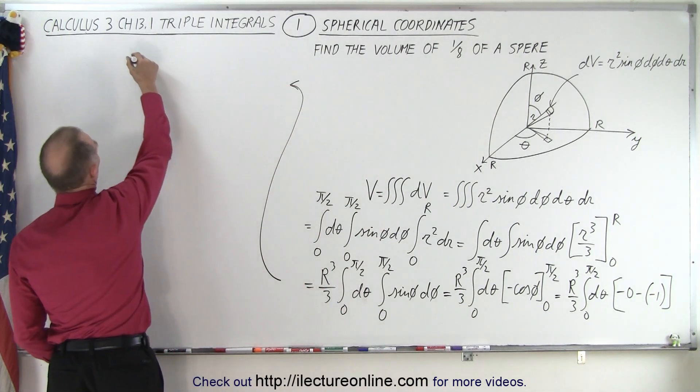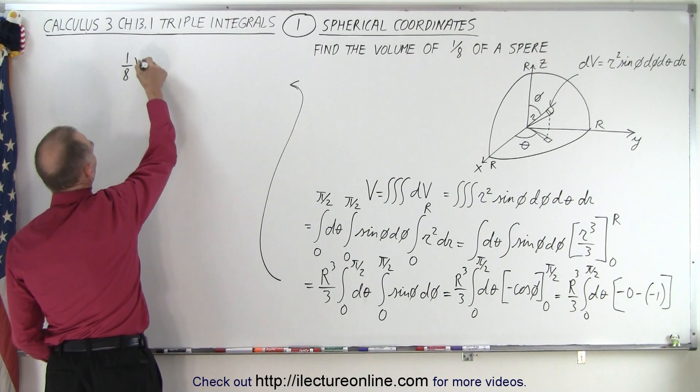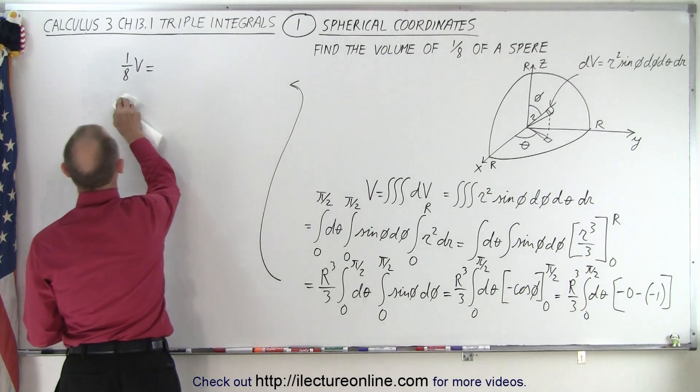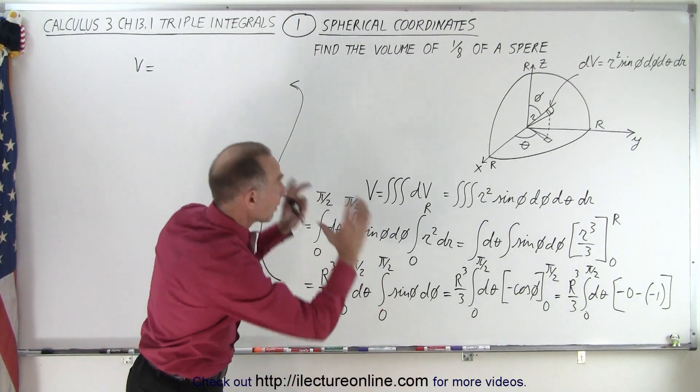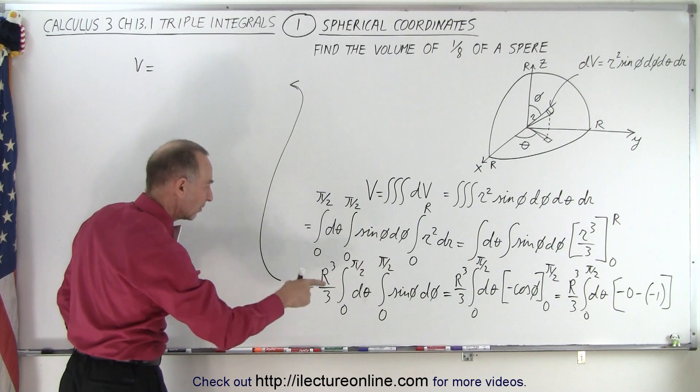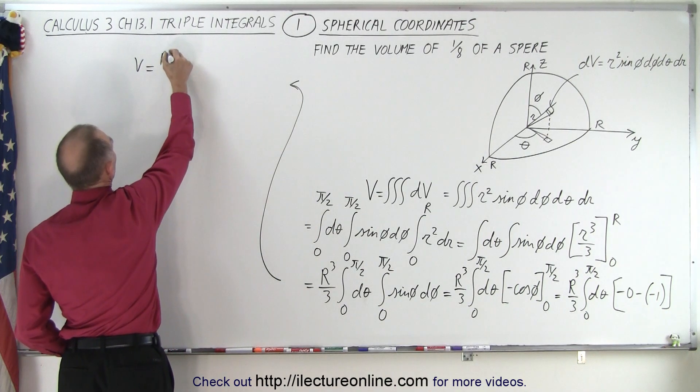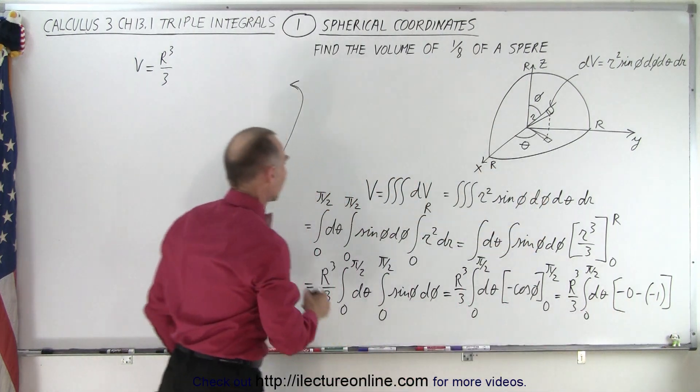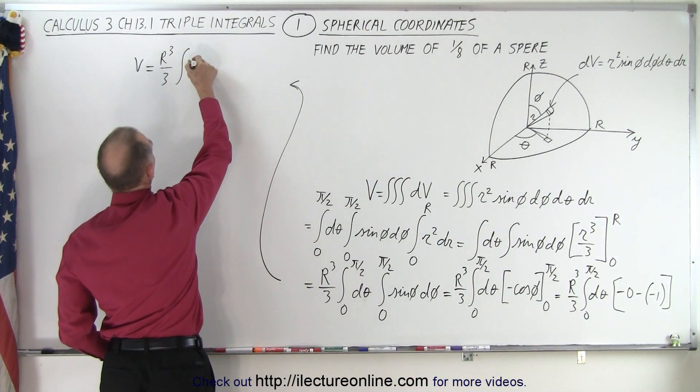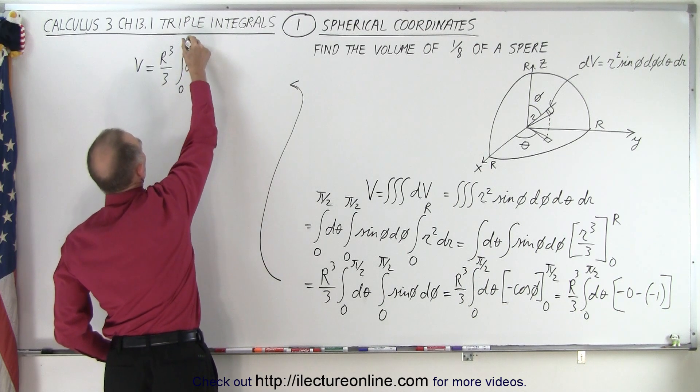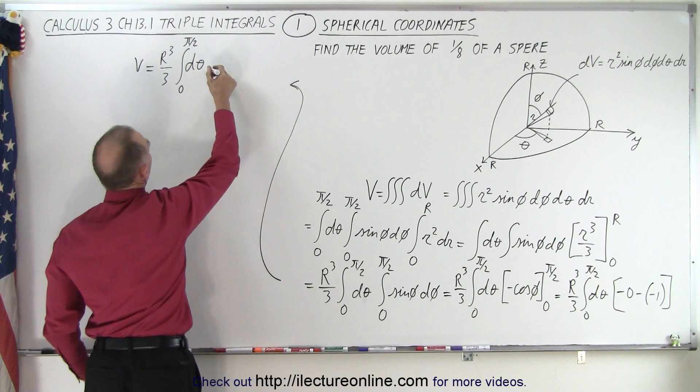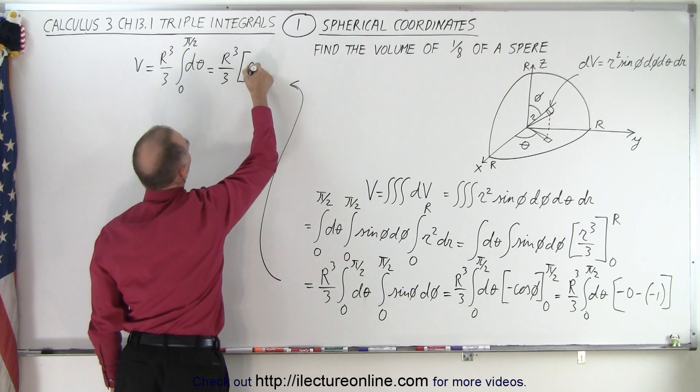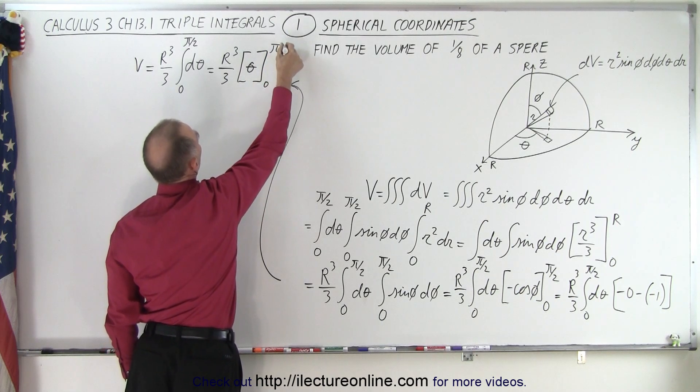So then we can continue. The volume of that section of the sphere is equal to, so we have r cubed over 3, we now realize that this becomes a 1, and all we have left now is the integral of d theta going from 0 to pi over 2. So when we integrate that, we get r cubed over 3 times theta, evaluated from 0 to pi over 2.